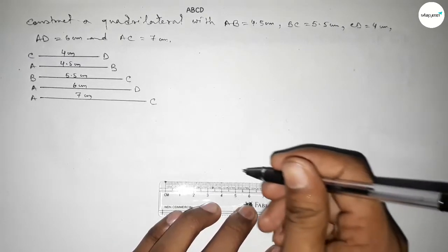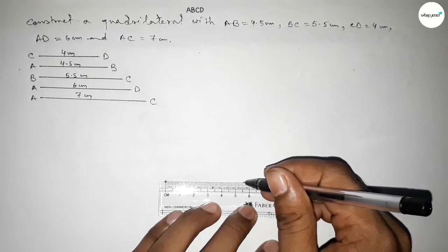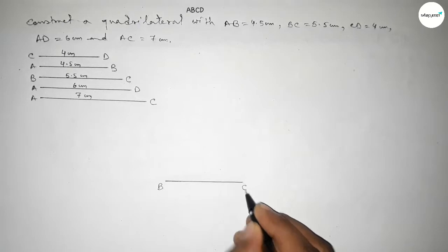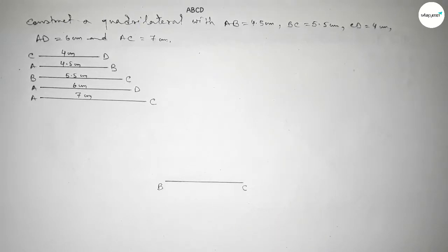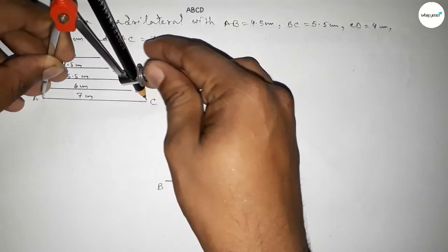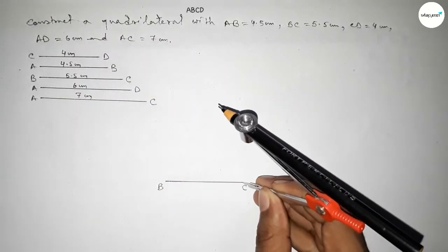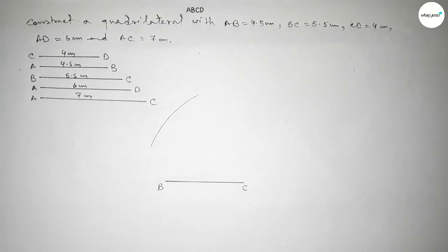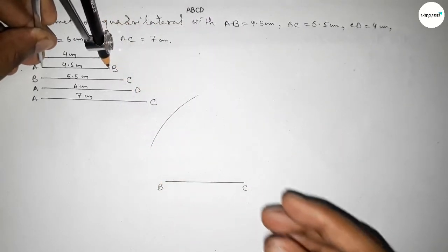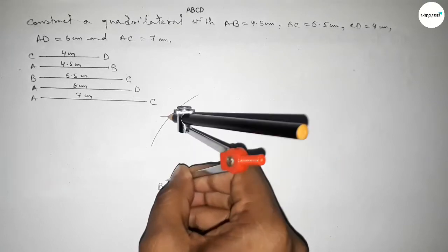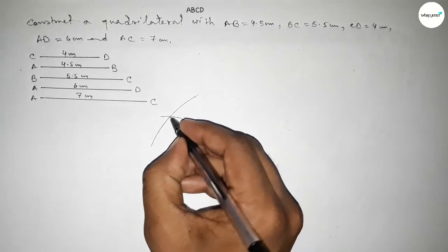First we have to draw a line of length 5.5 centimeter, taking point B and point C. Now taking the length 7 centimeter by using compass, putting the compass on point C and drawing an arc. Next taking the length AB equal to 4.5 centimeter by using compass, putting the compass on point B and cutting. Both curves intersect at a point, so taking here point A.